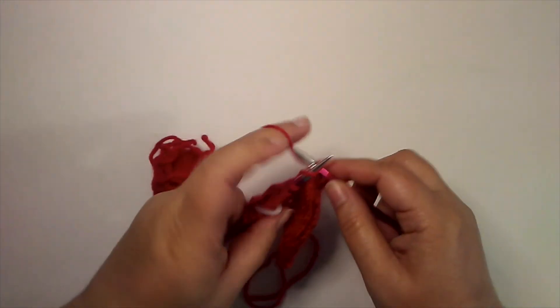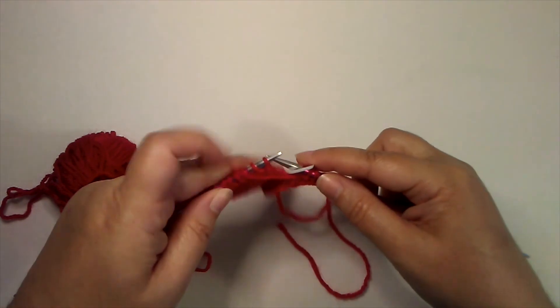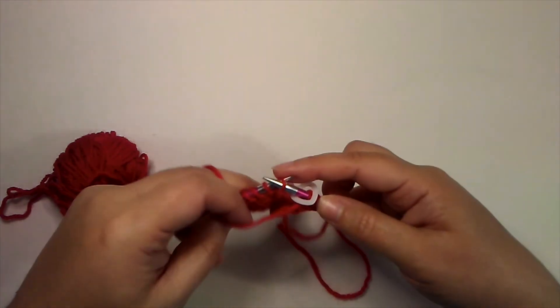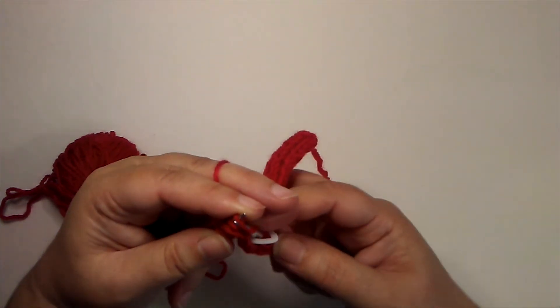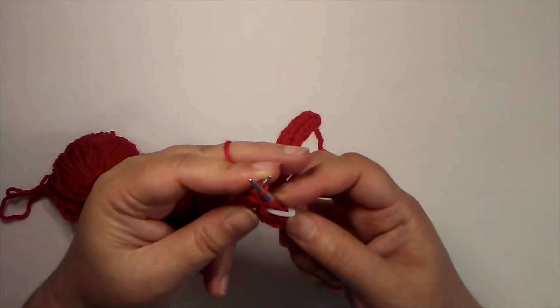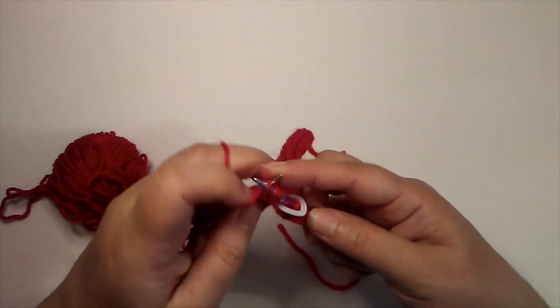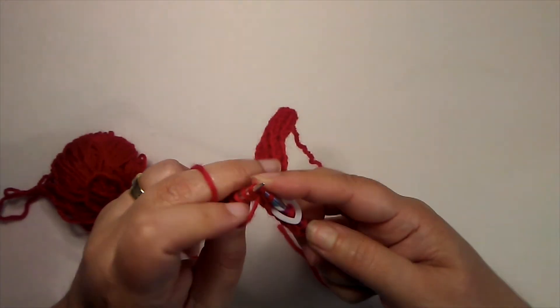It starts out the same—our yarn is in the front. We purl into that front leg, we turn our work just a little, purl through the back leg.